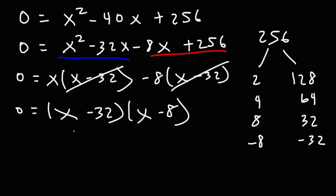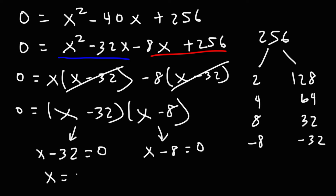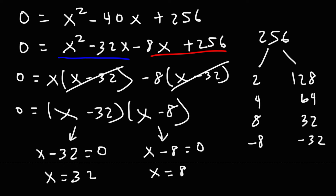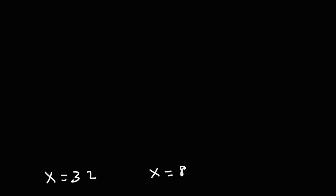Using the zero product property, we can set each of these factors equal to zero. Adding 32 to both sides, we get x equals positive 32. Adding 8 to both sides, we get x equals 8. So let's go back to our original equation: the square root of x plus the square root of 8x is equal to 4. We have two possible solutions.